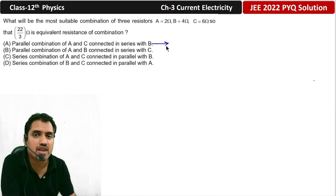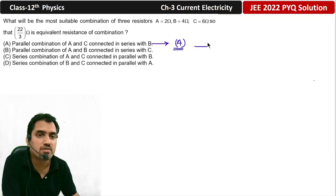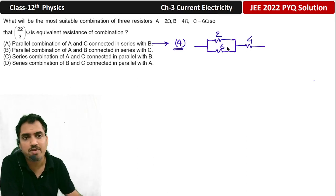First, if we see option A, we say that A and C are parallel combination. Meaning, here we have A and C in parallel and B which is connected in series. So, here we have A and C in parallel and 4 which is in series. Now, let's check and see.